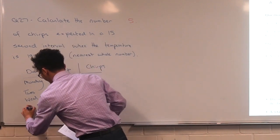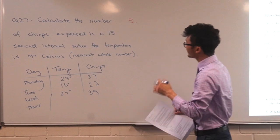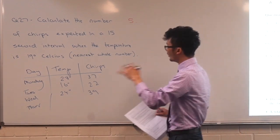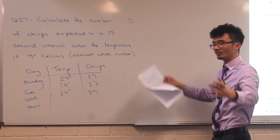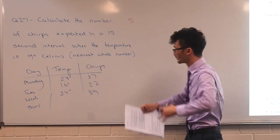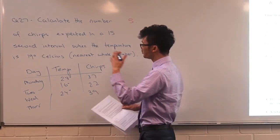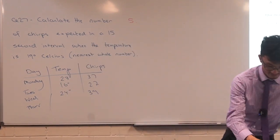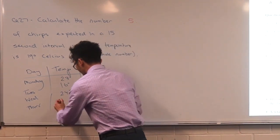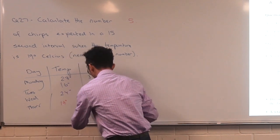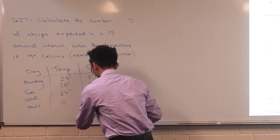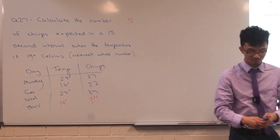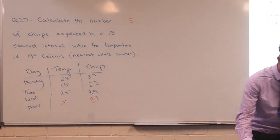The question that this is essentially asking, right? Calculate the number of chirps expected when the temperature is 19 degrees Celsius. Let's say we've collected a lot more data than just these three days. We've collected this whole heap now. Can we predict if the temperature is 19 degrees? If the temperature is 19 degrees, what? How many chirps are they going to be? That's essentially what this is asking.